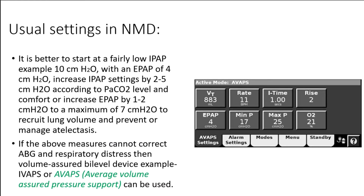If the above measures cannot correct ABG and respiratory distress, then a volume-assured pressure device — e.g. iVAPS or AVAPS (average volume assured pressure support) — can be used.